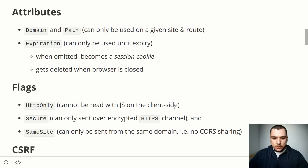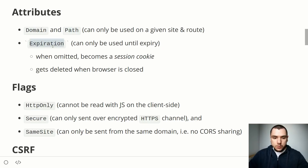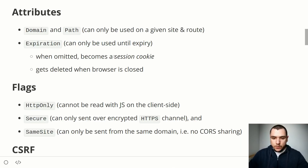Cookie attributes and flags include Domain and Path, which narrow down the scope of a cookie so it can only be used on a given site and route. The Expiration attribute sets an expiry date — the browser can only use the cookie until that date. If the expiry date is omitted, the cookie becomes a session cookie — most browsers will delete it when the browser session is closed, giving it a very short lifespan.